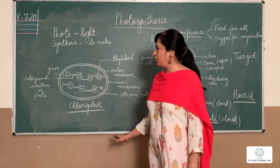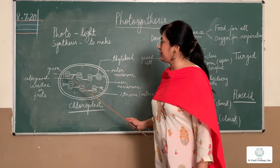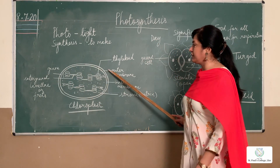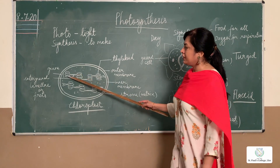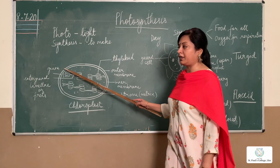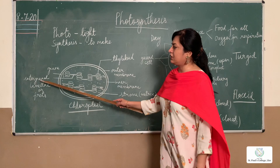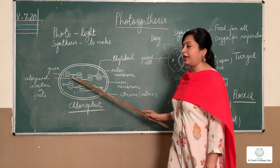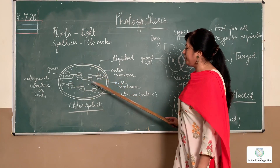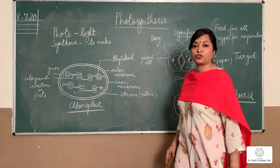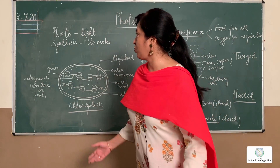Now we'll move on to the structure of the chloroplast. Chloroplast is present only in plant cells. It is a double-membranous plastid — you can see an outer membrane and an inner membrane. Inside are the thylakoids arranged as grana, and these grana are interconnected by intergranal lamella, commonly referred to as frets. This entire area is filled with a matrix called stroma.